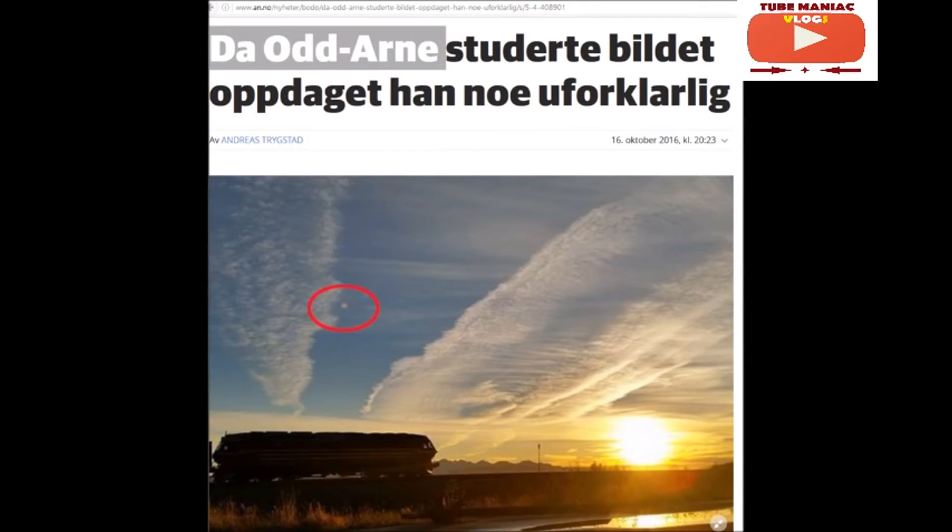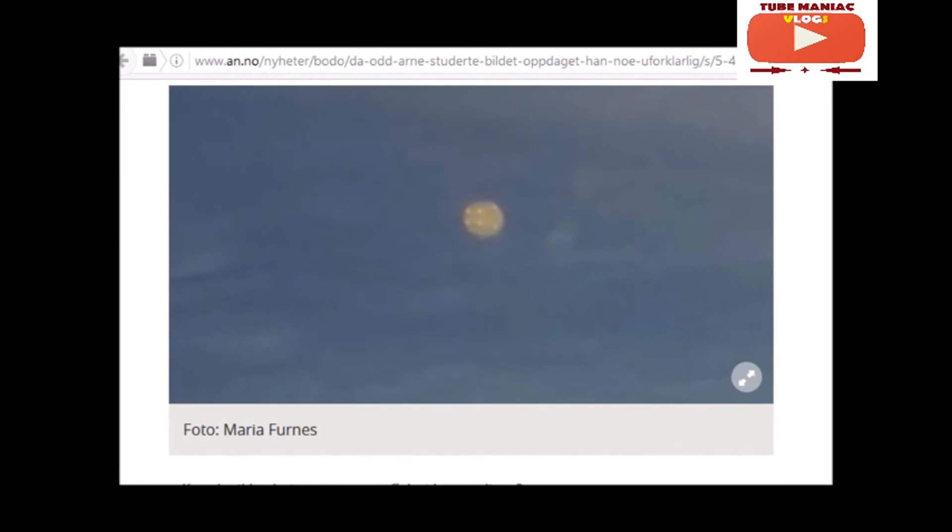The media is now taking notice to these strange objects in the sky. On October 16th, a Norwegian newspaper published this article and these images, showing a strange orb-like planet to the left of the sun. What we are seeing in 2016 defies any logical explanation. UFO or planet, the camera capture sets the stage for what is coming our way.